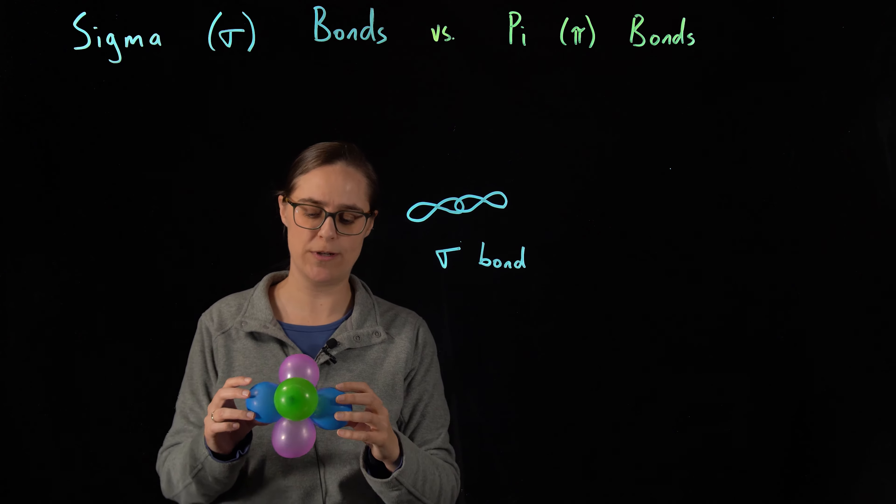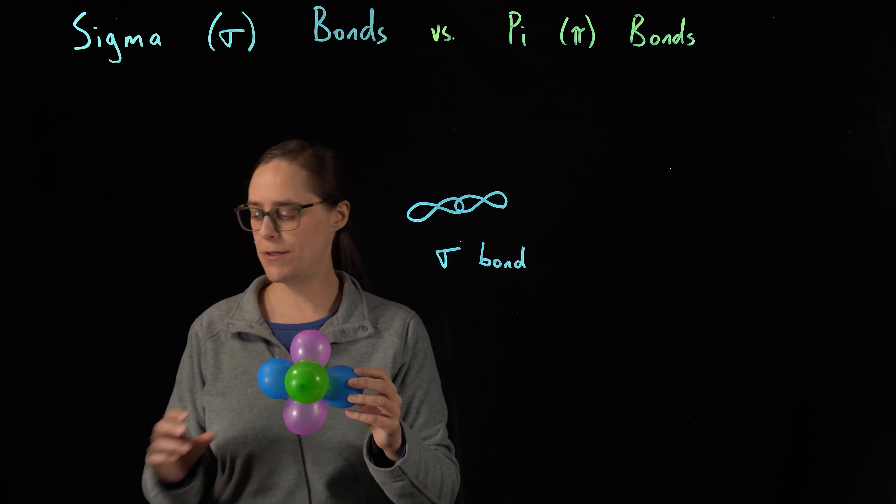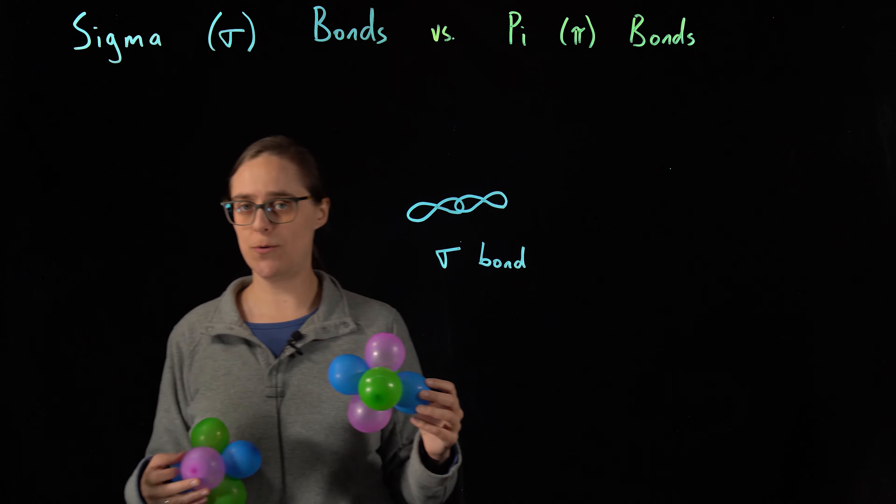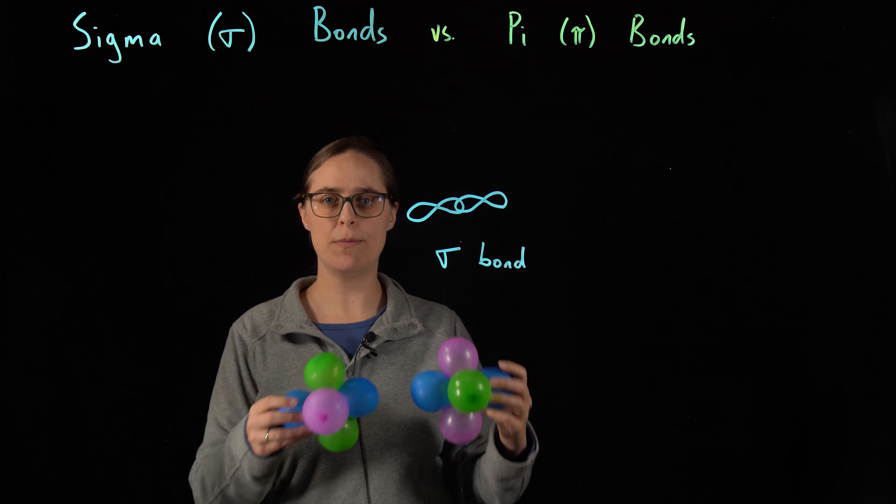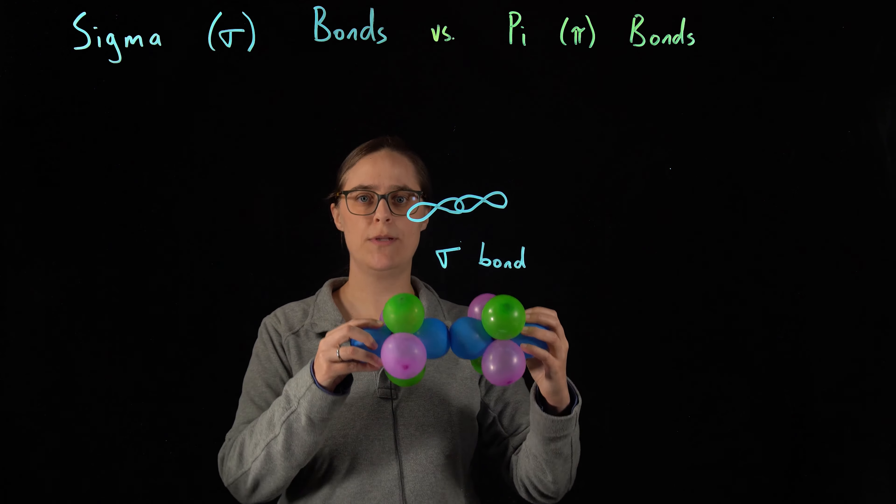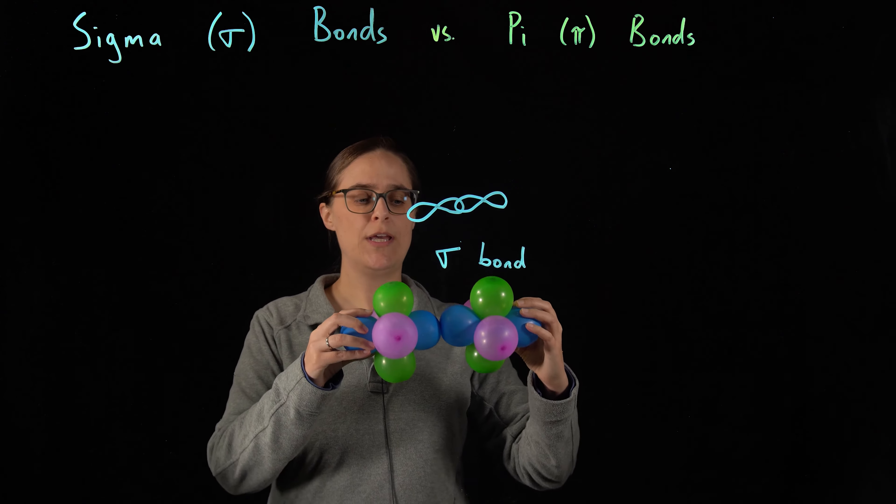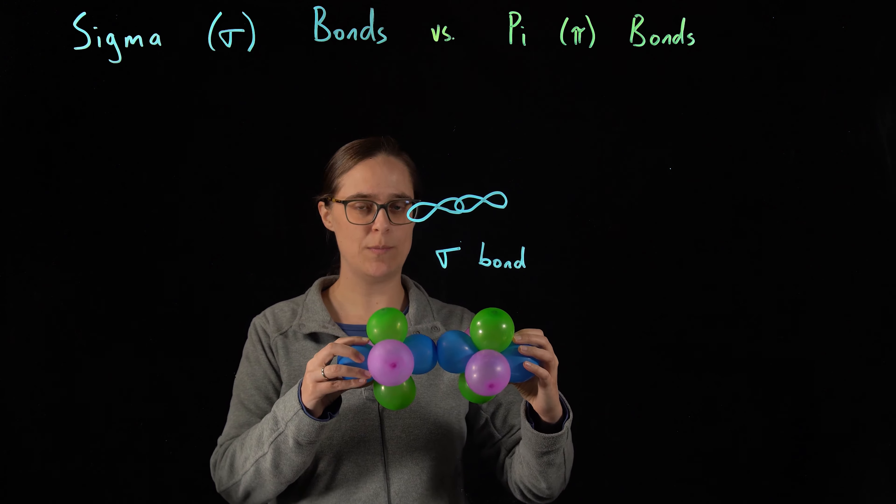It can differ depending on what atom we're talking about. So imagine that you had two of these atoms, and you already had a sigma bond formed, a head-to-head overlap between two of the orbitals, and you want to form a second bond.